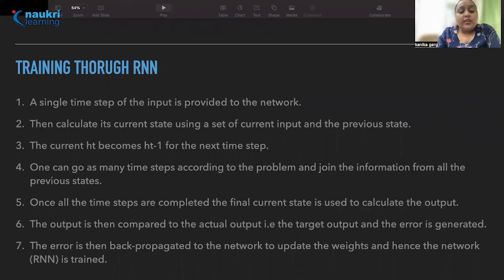Then we can go as many time steps according to the problem as we want and join the information from all the previous states together. Once all the time steps are completed the final state is used to calculate the output and then we match this output with the actual output. Whenever there is a difference between the actual and the calculated output the error is generated and it is propagated back to the network so that we can update our weights and biases according to the error we got. This is how the learning or the training through RNN is completed.